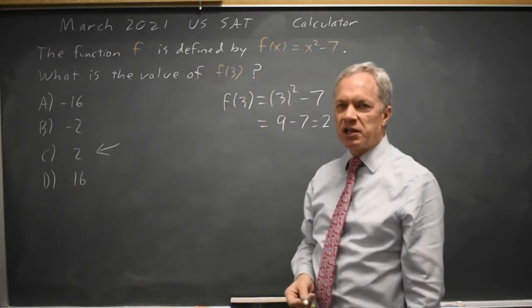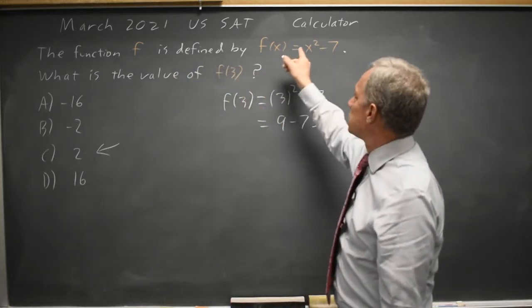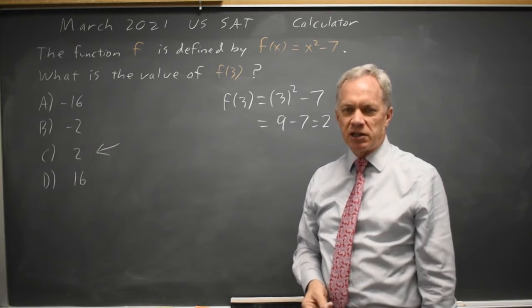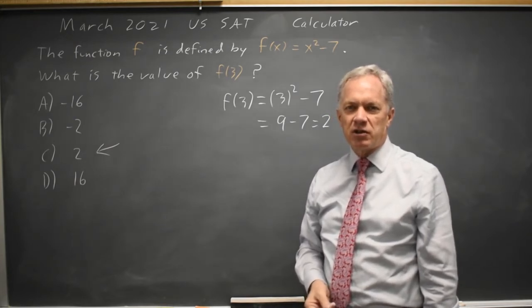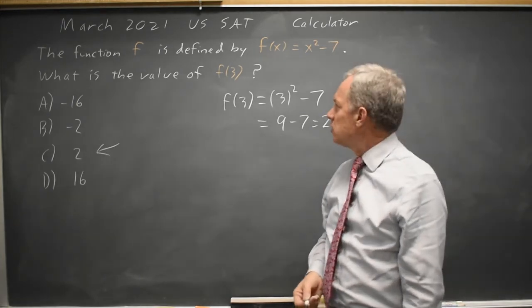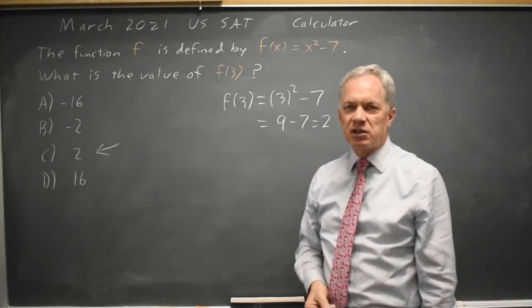Alternatively, if you have a graphing calculator, you can put x squared minus 7 into y equals on your graphing calculator and then either use the trace feature on the graph or the table feature to find the y value when x equals 3 and that will also give you the same answer.